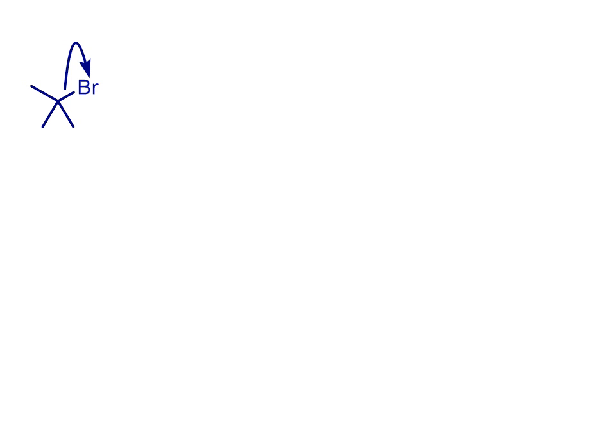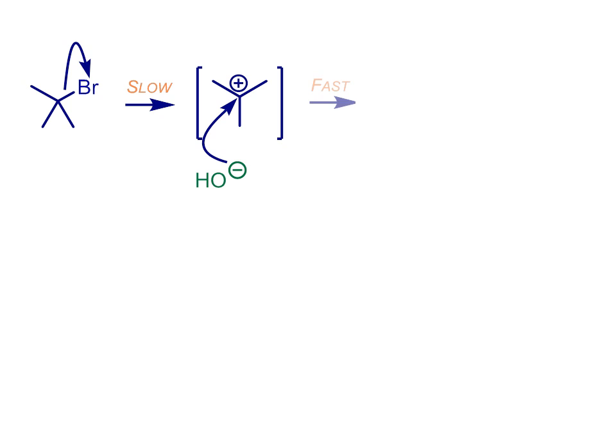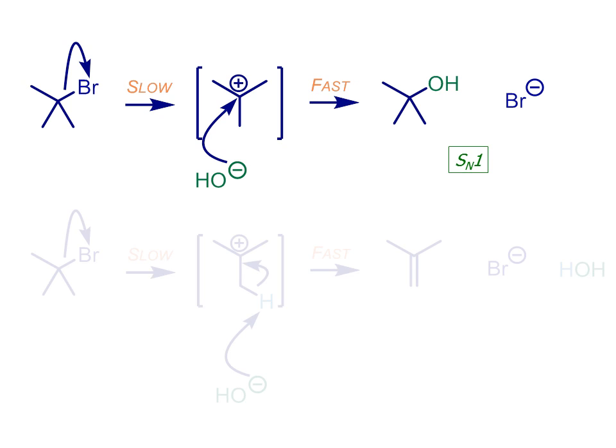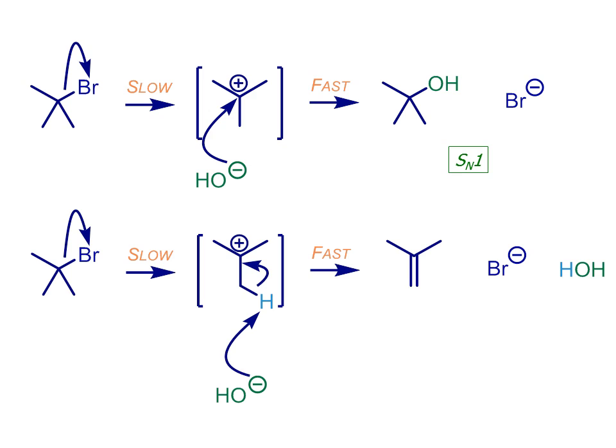We have seen that a tertiary alcohol halide like this one might reasonably be expected to lose bromide and form a carbocation intermediate as part of an SN1 reaction, where that cation is then intercepted by a nucleophile to give a substituted product. Alternatively, deprotonation of the carbocation leads to our E1 reaction pathway and an alkene product, as shown at the bottom here.